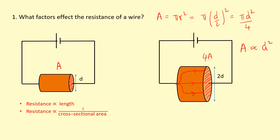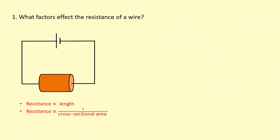It doesn't matter whether you use radius or diameter in this problem. Because it's squared, if we double the diameter, the area becomes four times as large. So we can say that resistance is proportional to 1 over radius squared, which is the same as saying 1 over diameter squared.